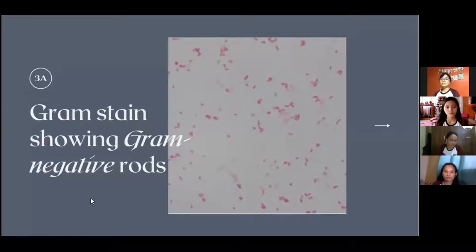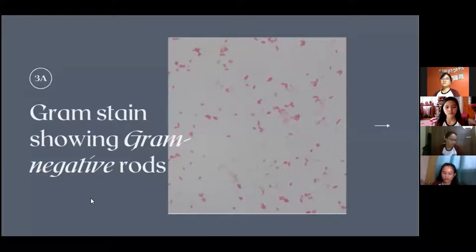Gram staining is a procedure used to differentiate gram-positive bacteria from gram-negative bacteria. Gram-positive bacteria appear blue or purple in color, and gram-negative bacteria appear pink. In this microscopic picture, the bacteria is gram-negative bacilli — rod-shaped and pink in color — which provides a preliminary result.